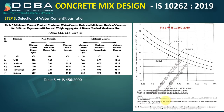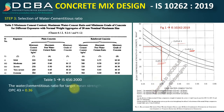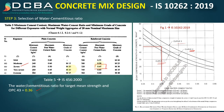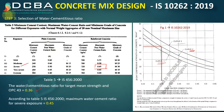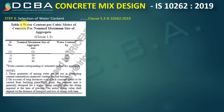Step 3 is selection of water-cementitious ratio. Our cement is OPC 43, so we use Curve 2 (Curve 1 is for 33 grade, Curve 3 is for 53 and above). Using Curve 2 with a target mean strength of 48.25 MPa, the water-cementitious ratio is 0.36. We verify this is less than the maximum free water-cement ratio of 0.45 for severe exposure in reinforced concrete — confirmed.